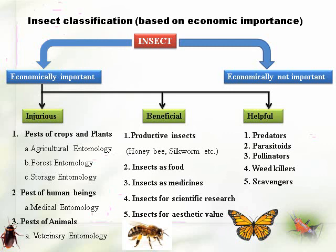The pests of animals are studied in veterinary entomology. Beneficial insects include productive insects like the honey bee, and insects which produce some valuable products. Some insects are consumed as food, some are used as medicine, some for scientific research, and some have aesthetic values. There are also other useful insects termed as natural enemies: predators, parasites, and pollinators, which have a good role in crop production. Scavengers also play a good role in decomposition of complex material into simpler material.